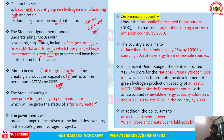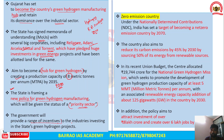Gujarat is framing a new policy for green hydrogen manufacturing, which will be given the status of a priority sector. This makes it eligible for loans, favorable policies from the state government, land allocation at subsidized prices, infrastructure creation, and power at discounted prices. The government will provide a range of incentives to industries investing in green hydrogen projects.